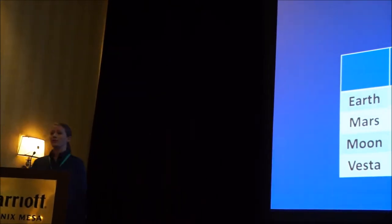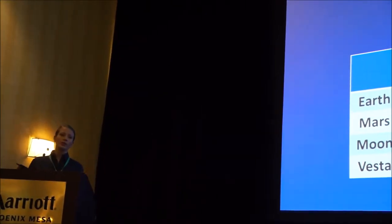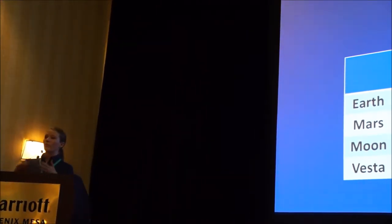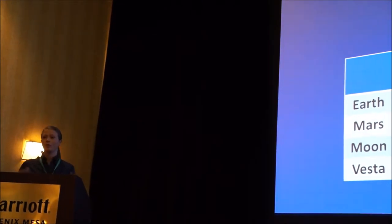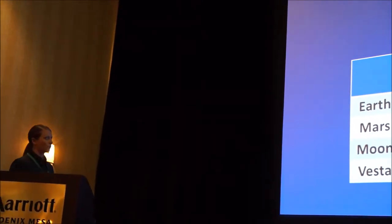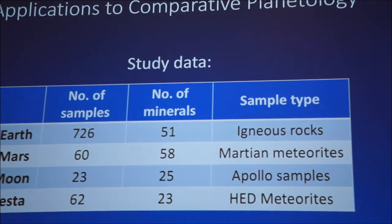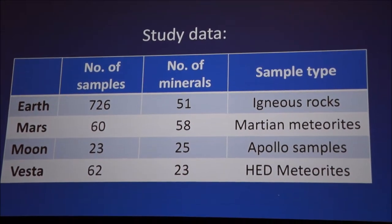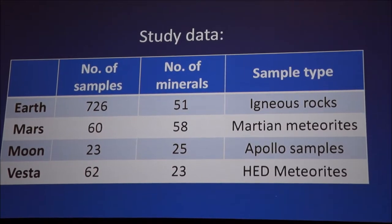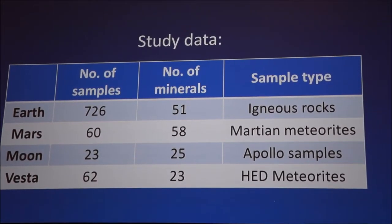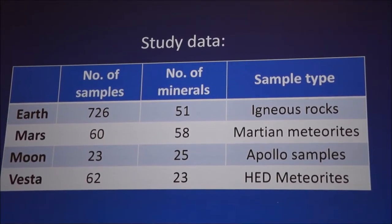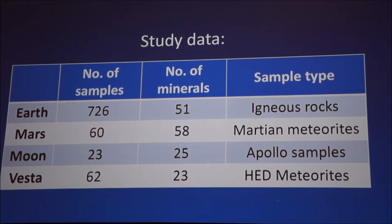So now let's talk about the data that we're using. Again, this is really preliminary. We're still in the data processing phase, so everyone bear with me on these numbers. I'm going to show you numbers, but they're more for the purpose of example than for actual results. But right now, our data set for Earth, we're using a set of igneous rocks developed by Johansen. He did an exhaustive petrological investigation of 726 igneous rocks on Earth. So that's what we're using to represent Earth.